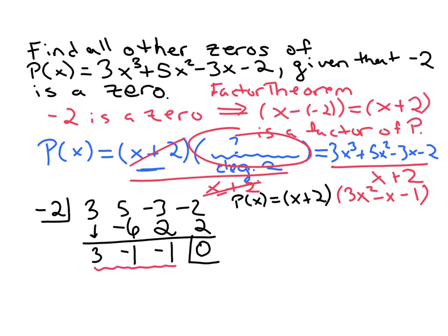So now to find the remaining zeros, we can just set that quadratic equal to zero. If we set this factor equal to zero, x plus two, then we get x equals negative two. We already knew that was a solution, but I'll circle it anyway.